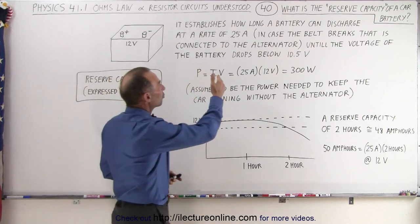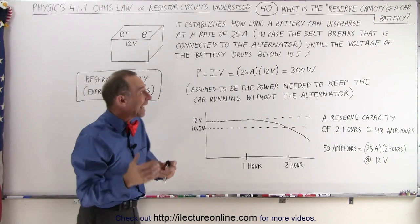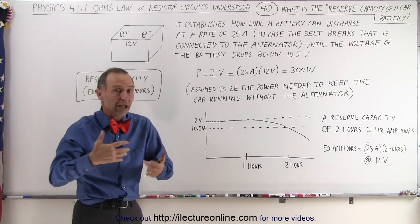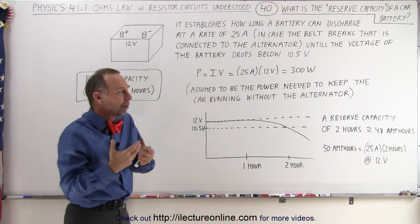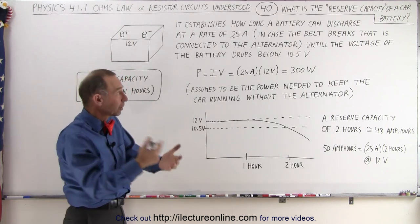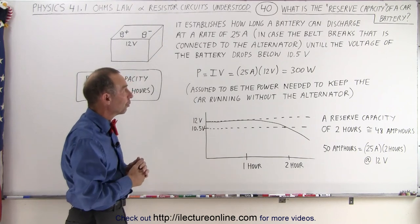It establishes how long a battery can discharge at a rate of 25 amps in case the belt that is connected to the alternator breaks, or the alternator stops functioning, so that there's no longer any production of charge for your car while you're driving that needs to run the spark plugs and all the electrical equipment on the car, the computers, and so forth.